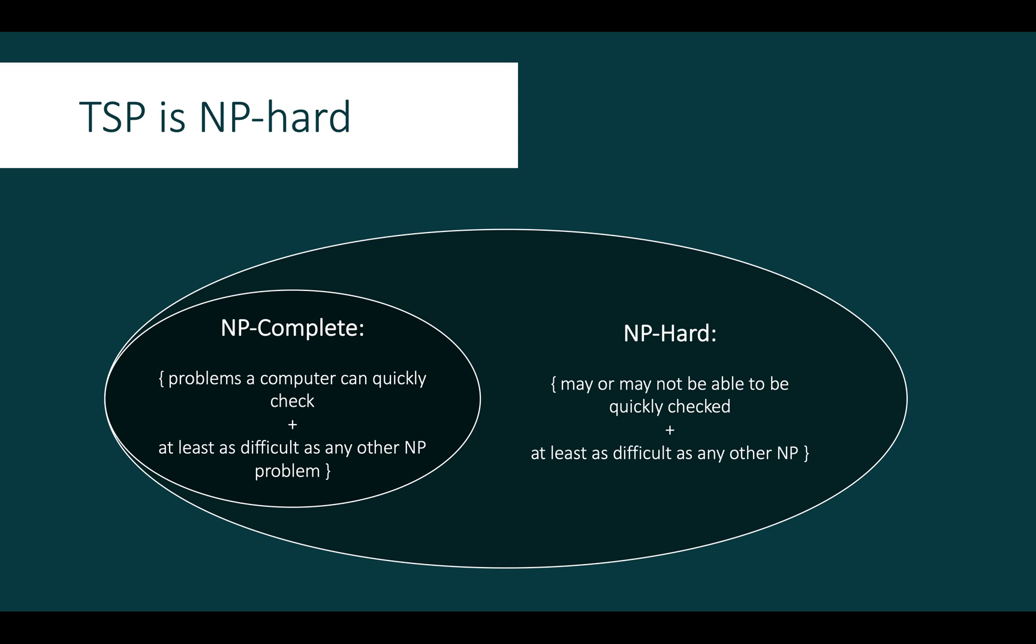NP-complete problems and NP-hard problems. NP-complete problems are the hardest problems in NP. That is, any other problem in NP can be reduced to an NP-complete problem in polynomial time. NP-hard problems are problems which are at least as hard as NP-complete problems, but they don't necessarily have to be in NP themselves.